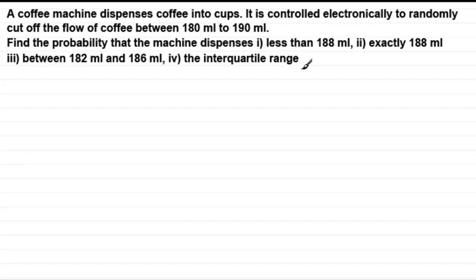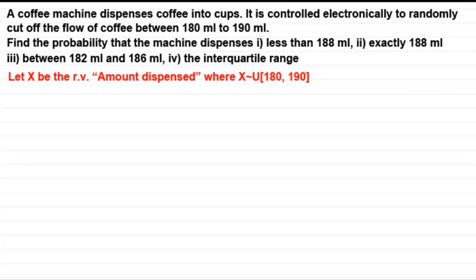The first thing I need to do is define the distribution. Let x be the random variable — the amount dispensed. And x is going to be distributed as a continuous uniform distribution with parameters 180 and 190.